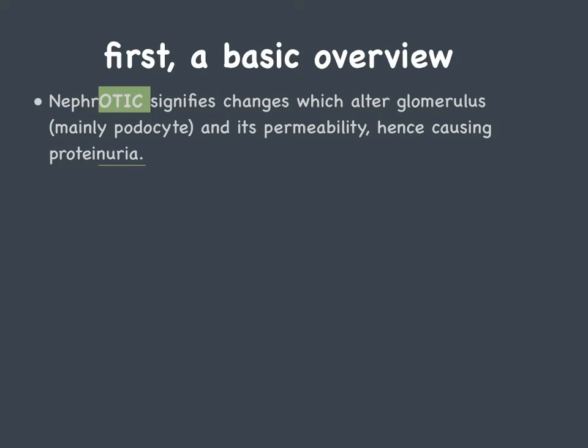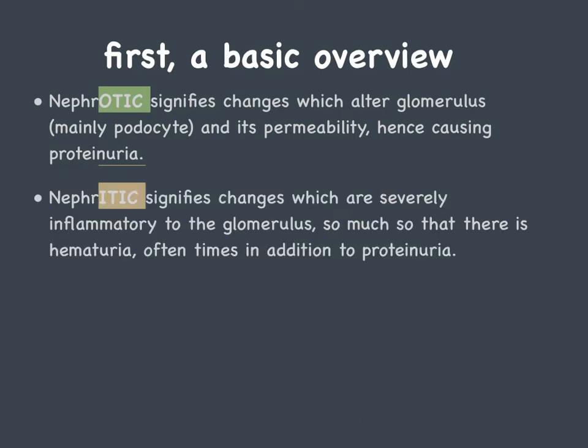So you have proteinuria, you have edema, and as a consequence you're going to see complications like thrombophilia and hyperlipidemia. It can progress to chronic kidney disease and have even worse complications if not treated. When we talk about nephritic, we're signifying changes which are so severely inflammatory to the glomerulus that there's hematuria.